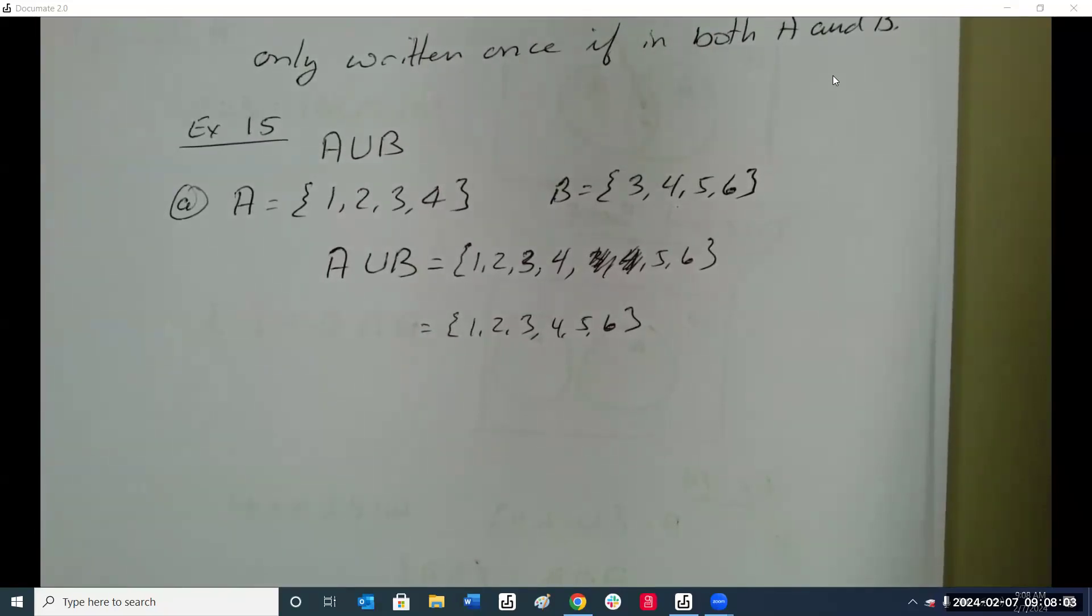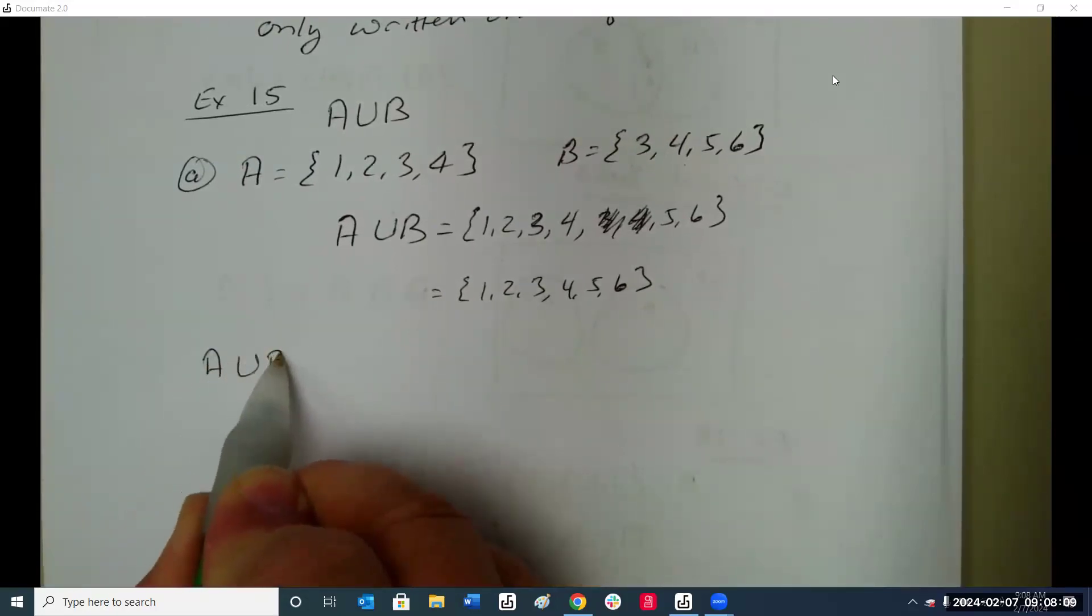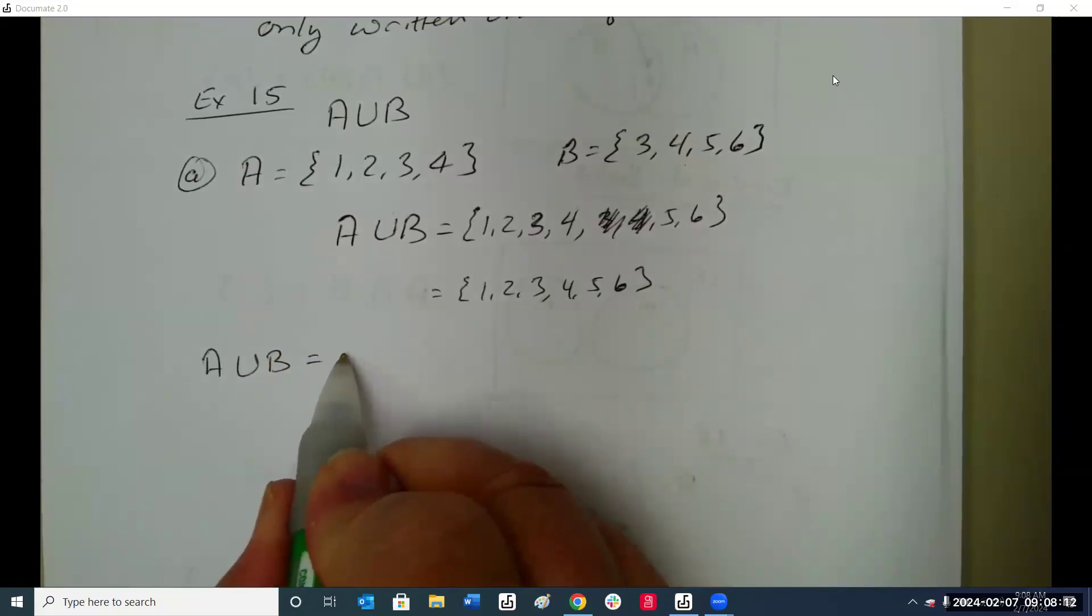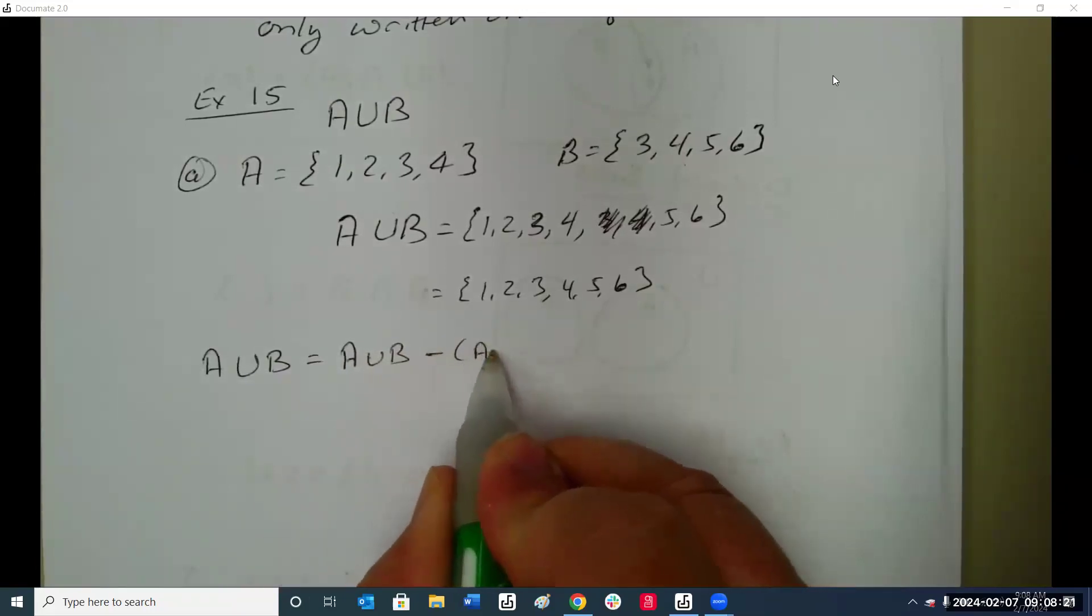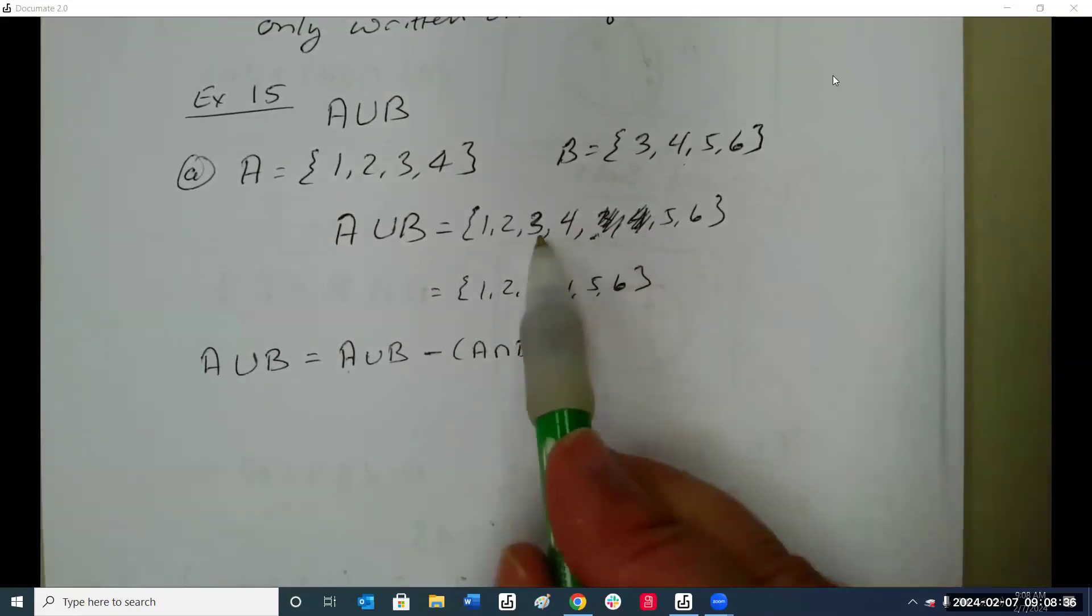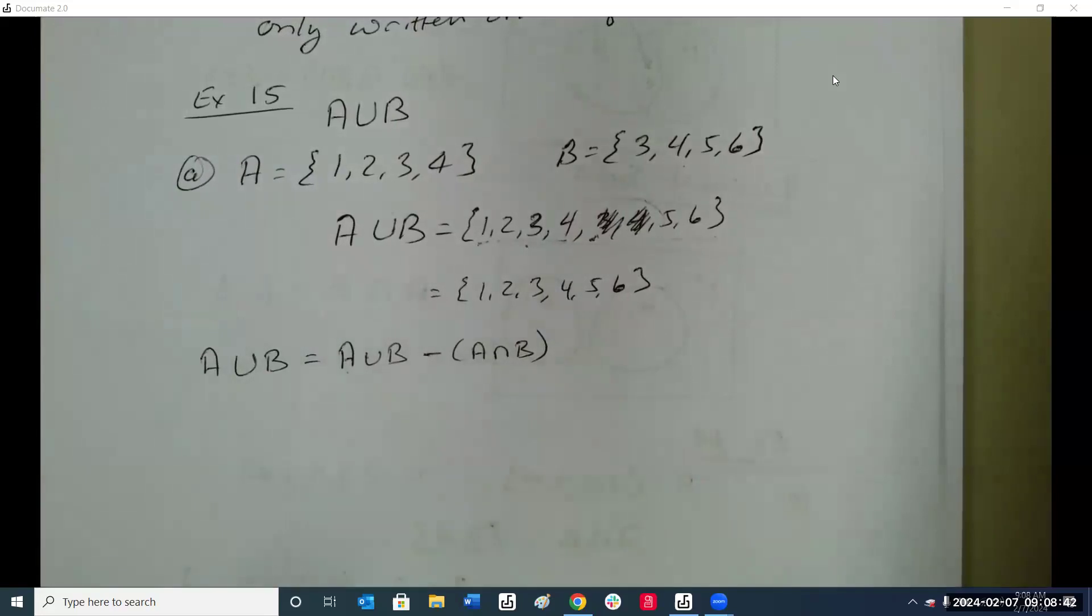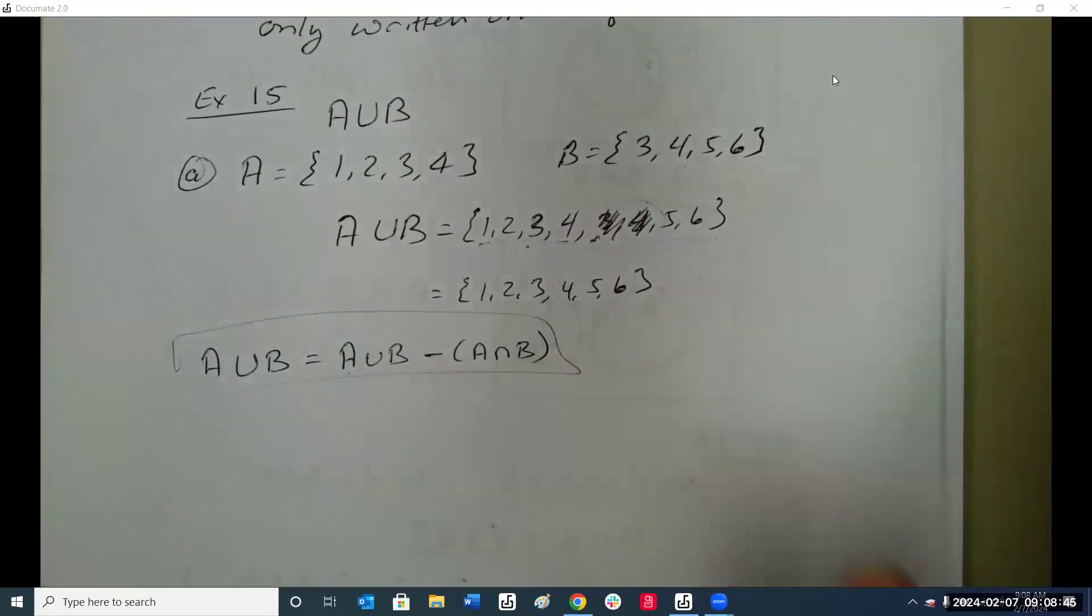The formal definition of the union symbol is A union B is where A and B are the same minus where they overlap. Because when you list all of A, you list all of B, and remove one of their overlappings. That's what we just did. There's all of A, there's all of B, and remove what they overlap. That's the formal definition.